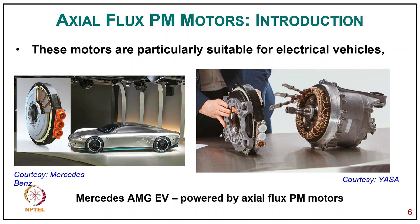These motors can have internal or external permanent magnets, and surface-mounted or interior-type permanent magnets. They are particularly suitable for electric vehicles. You can see how the axial flux motor looks — for example, the Mercedes-AMG EV powered by an axial flux motor — and a comparison of radial flux motor on the right side versus the axial flux motor in terms of size and how it can be fitted into the hub of the wheel.